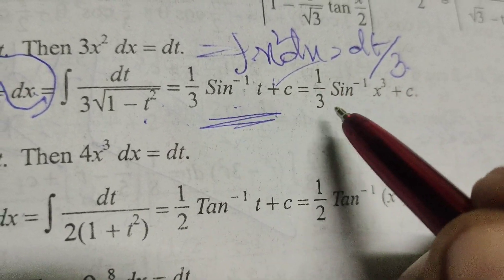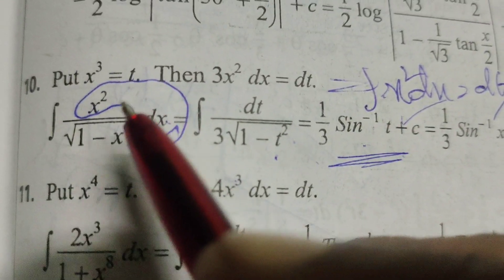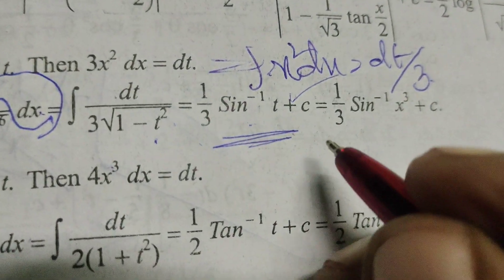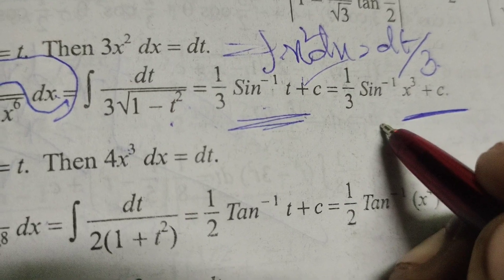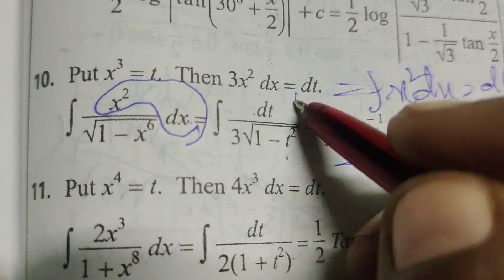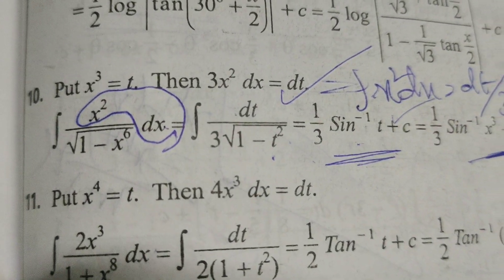Therefore 1 by 3 sin inverse, here t means x cube. 1 by 3 sin inverse x cube plus c. This is the solution by the given evaluated integral. Okay.